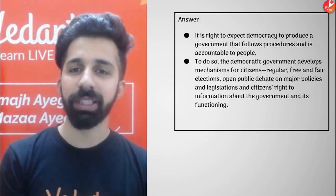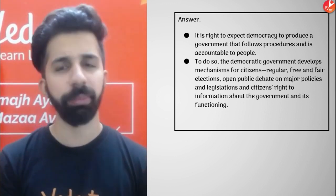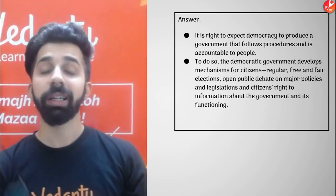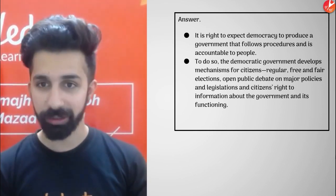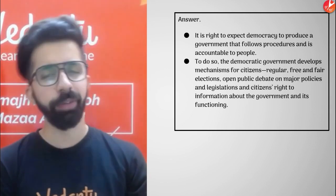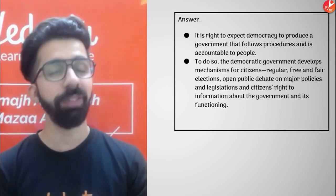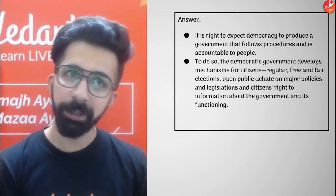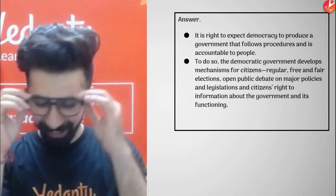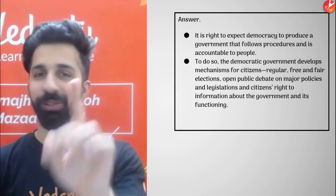To achieve this, the democratic government develops mechanisms to be responsive and legitimate — like conducting regular free and fair elections, open public debate on major policies, right to information, and a lot of other things. This is how the government tries to achieve its objective of being responsive, legitimate, and accountable. Continue with the next question because I really don't want to waste your time.